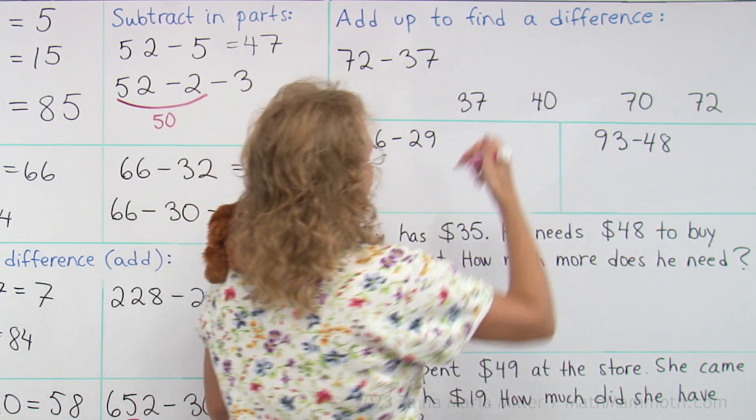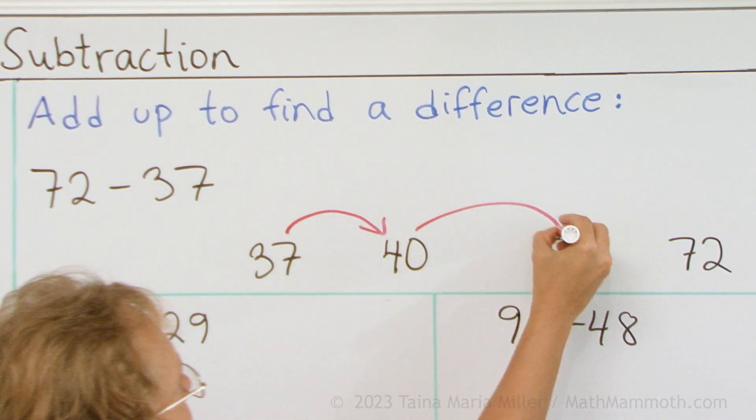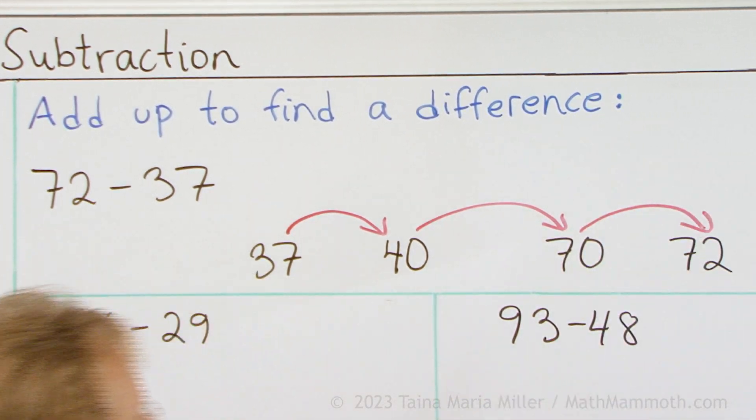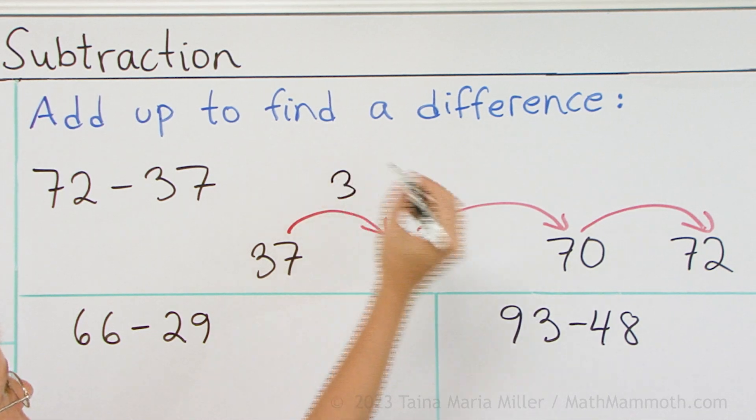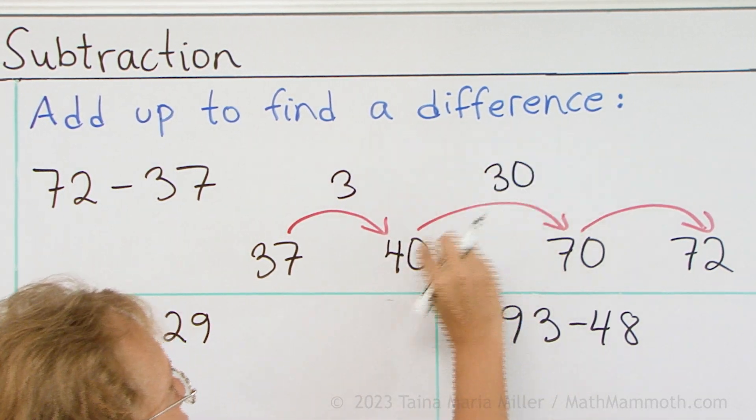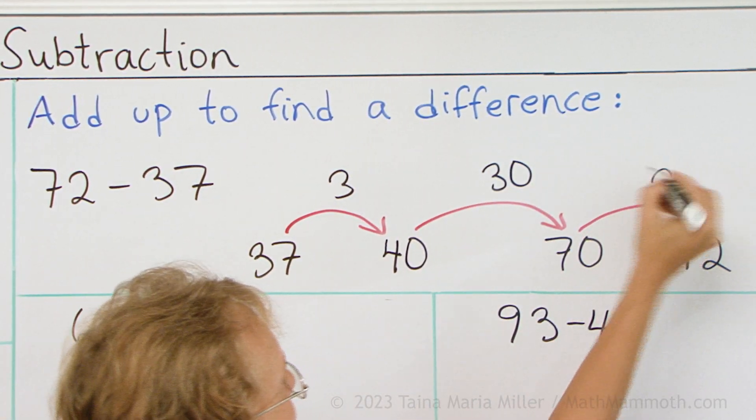Okay. Let's put here like arrows to show the jumping. And from 37 to 40 is 3 steps. Over here 30 steps. And lastly 2 steps.